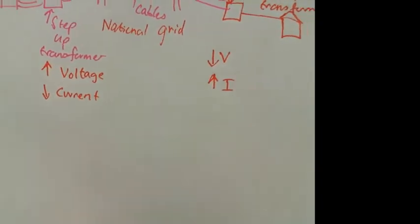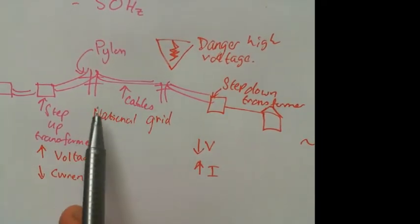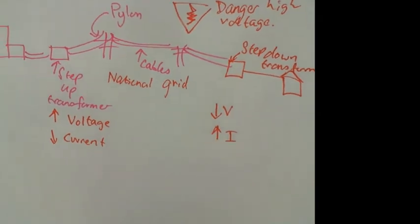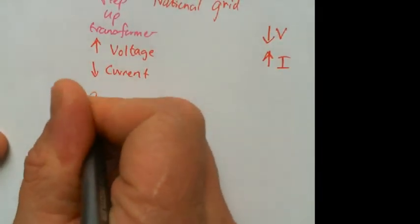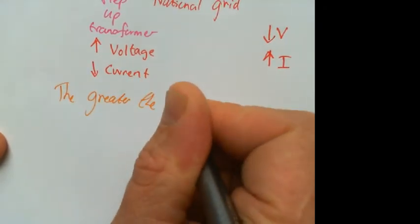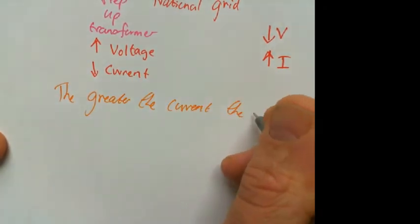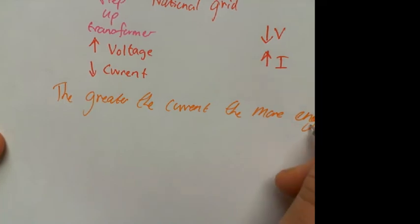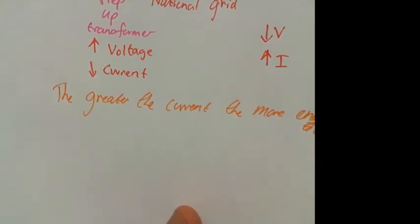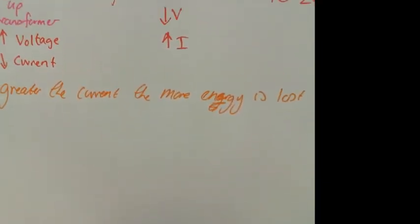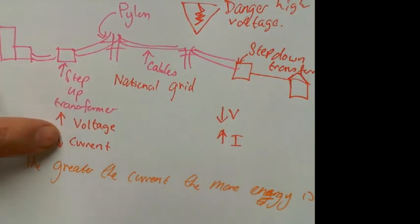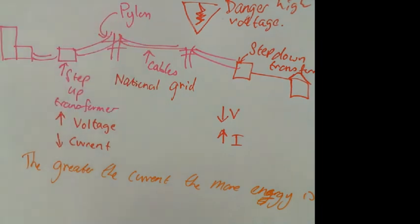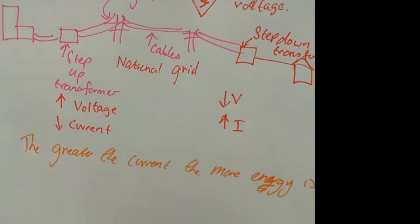And why do we do that? Why do we step it up, and step it down? Well, it has to do with this bit here, to do with the national grid. So what you need to know is, you need to know that the greater the current, the more energy is lost. So the greater the current, the more energy is lost. So the step-up transformer decreases current to reduce the amount of energy is lost in the national grid. That's why it does it. The greater the current, the more energy is lost.